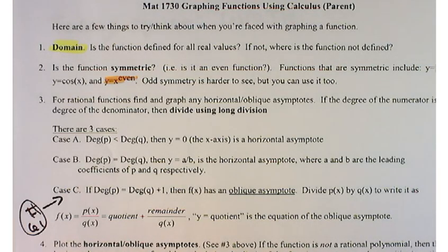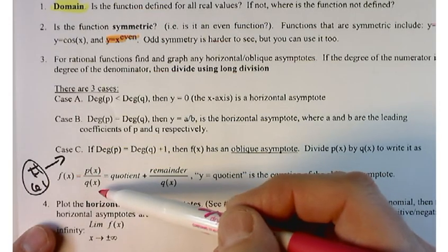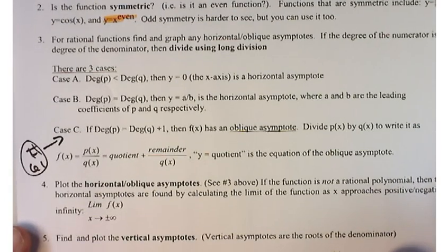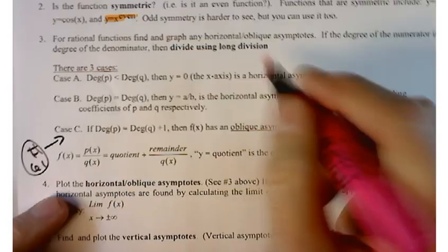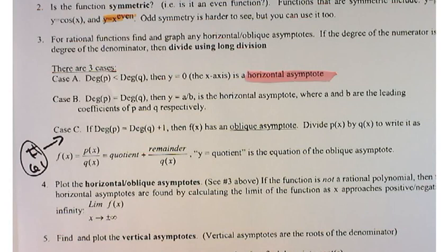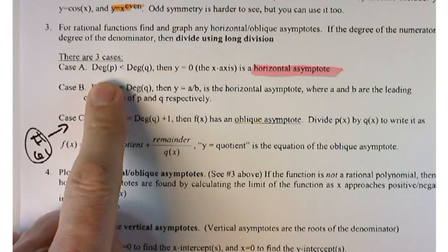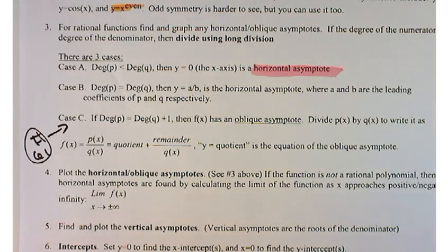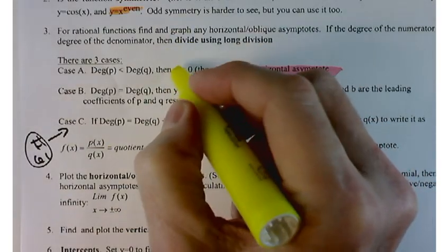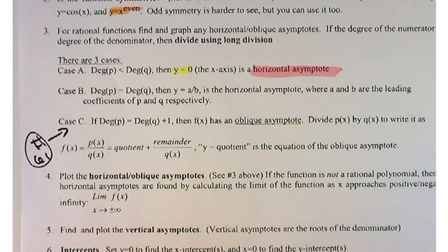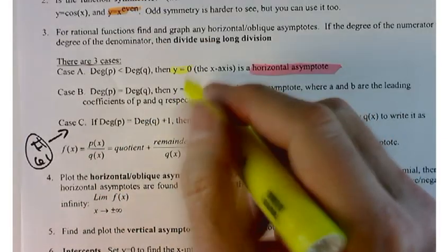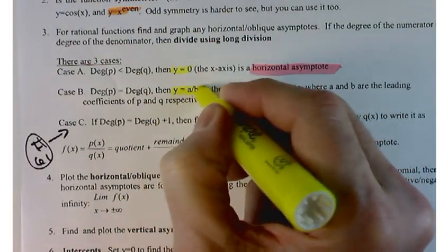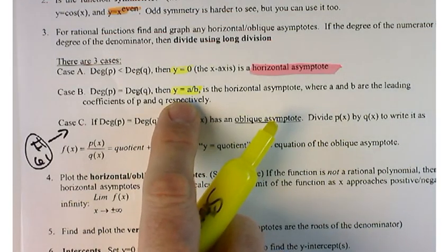For rational functions — functions that are really a polynomial divided by another polynomial — a lot of times you can pick up some asymptotes from those. You can find a horizontal asymptote, and there are three different versions of that. It depends on the degree of the numerator and the degree of the denominator. If the degree of the numerator is less than the degree of the denominator, the graph will head towards y = 0 as a horizontal asymptote. If the degree of the numerator equals the degree of the denominator, the asymptote is going to be the ratio of the leading coefficients. We should see an example like that today.